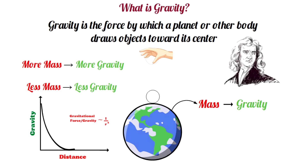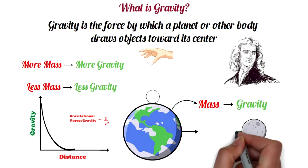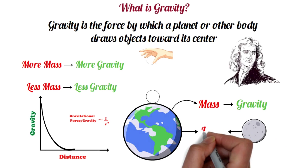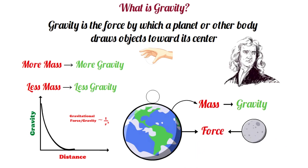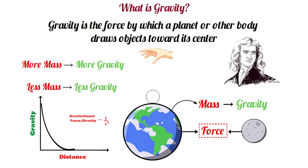Newton clearly stated that any two objects in this universe attract each other with a certain amount of force, but he could not explain what caused this attractive force. That is, he told us about the strength of gravity, but he never found the source of gravity.